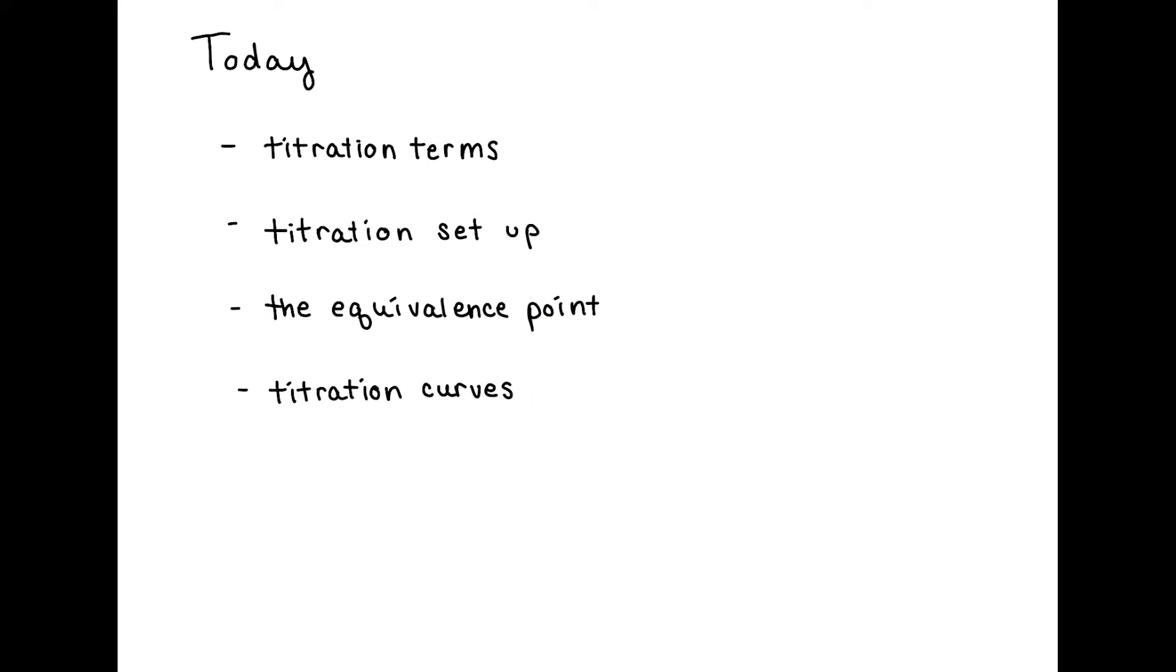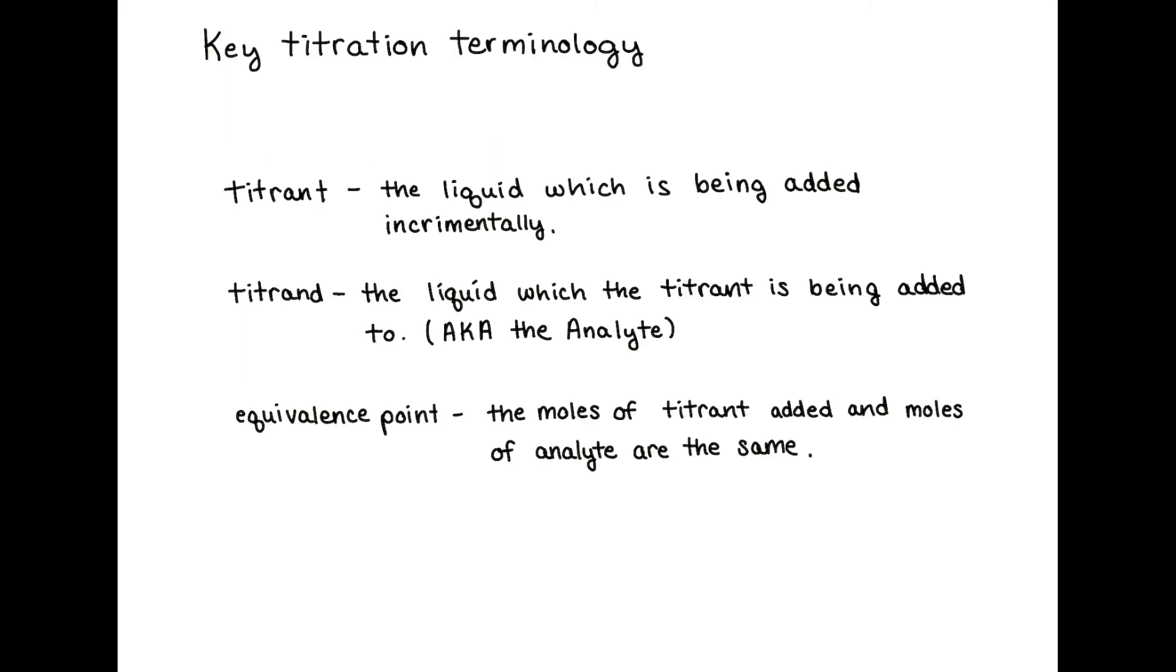Titrations can be rather confusing, so first let's define all of the terminology you'll use when talking about titrations. The three key terms to understand are titrant, titrand, and equivalence point. The titrant is the liquid that is placed within the burette. This liquid is incrementally added to the titrand.